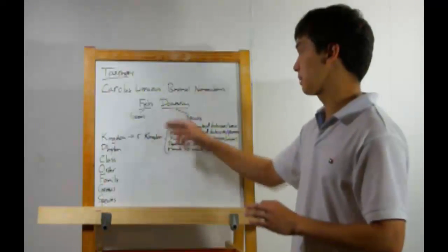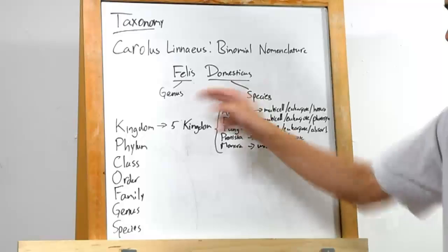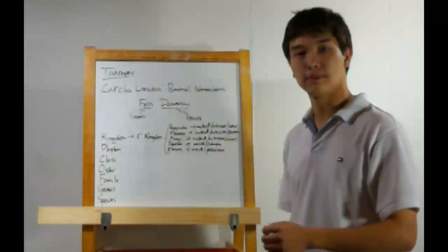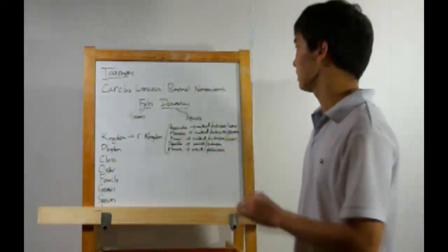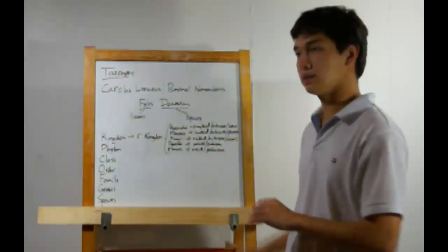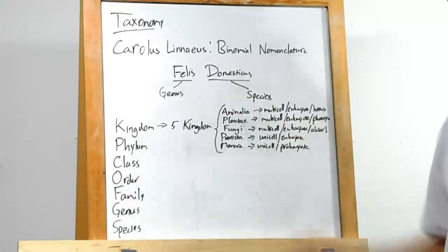This is an example of the system in use: Felis domesticus, if you will — the common house cat. The system uses the genus first and then the species.